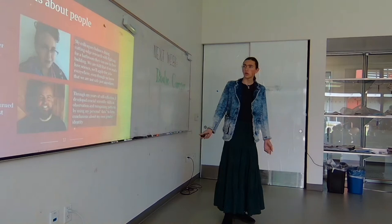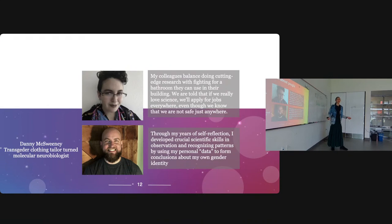Somewhat to supplement the imperfectness of quantitative data, I also wanted to look at some qualitative data, because in the end, this is about me understanding other people's experiences, and sometimes that's best not done through numbers and graphs. And so I wanted to highlight two voices that I found on the interwebs, Jen Hope, who's currently a researcher and research-adjacent person in neuronal development at Stanford, and Danny McSweeney, who's a transgender clothing-tailored-turned-molecular neurobiologist, as I found out on his LinkedIn last night.